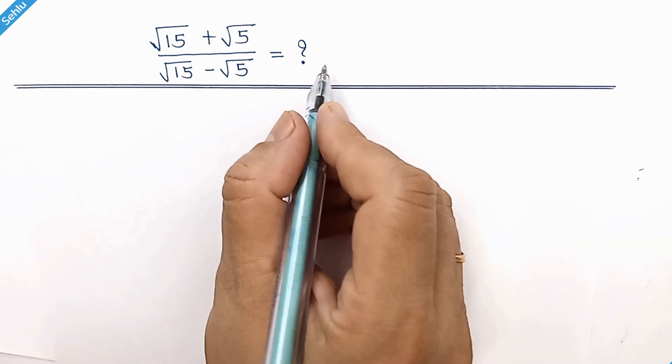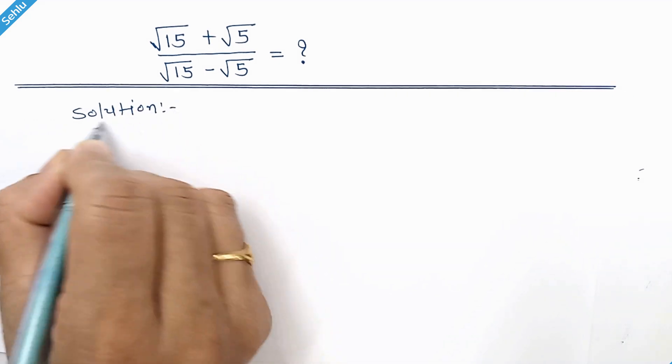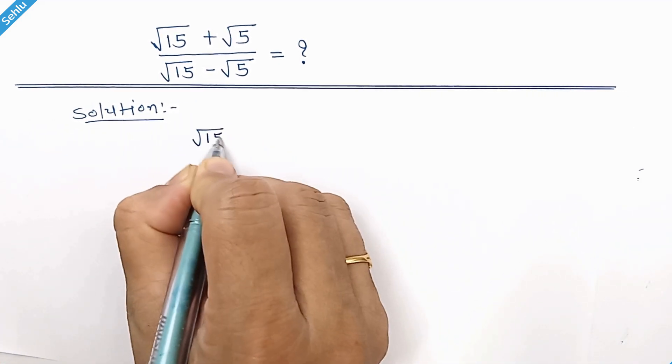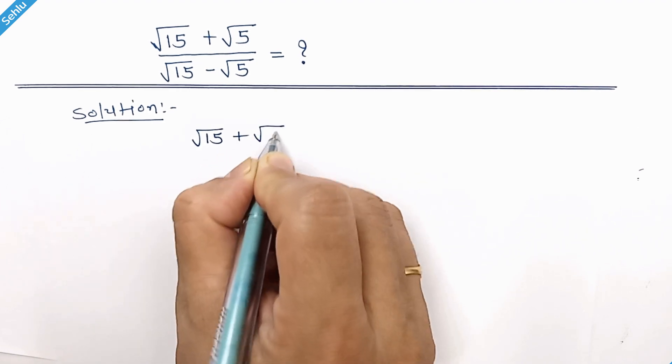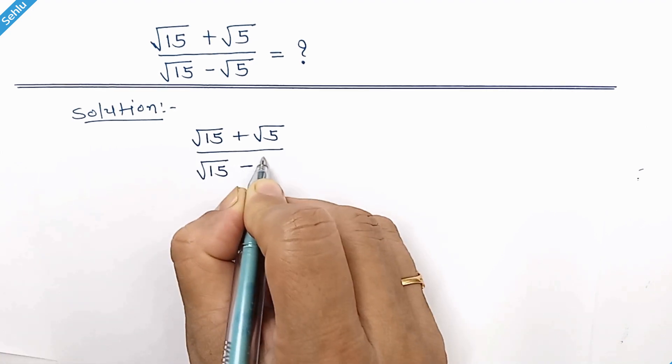Hello friends, let's simplify this. Let me put the question first: square root 15 plus square root 5 over square root 15 minus square root 5.